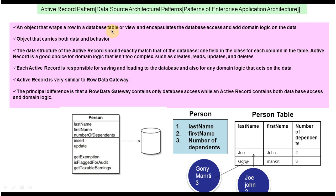An object that wraps a row in a database table or view — what does it mean? Suppose we create an object that represents the first row; it will look like a person object with Joe, John, and 2. If we create an object that represents the second row, it will look similar. So for each row, one person object will be created.